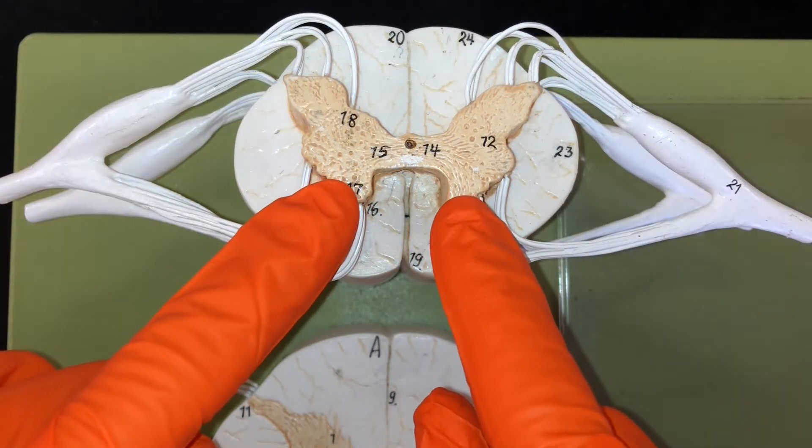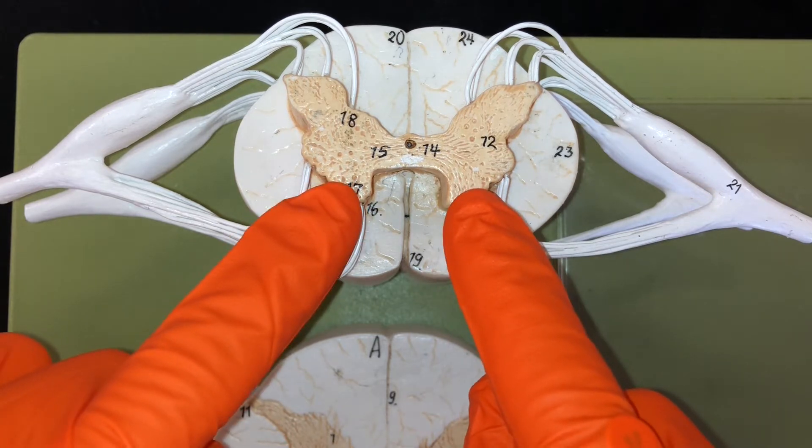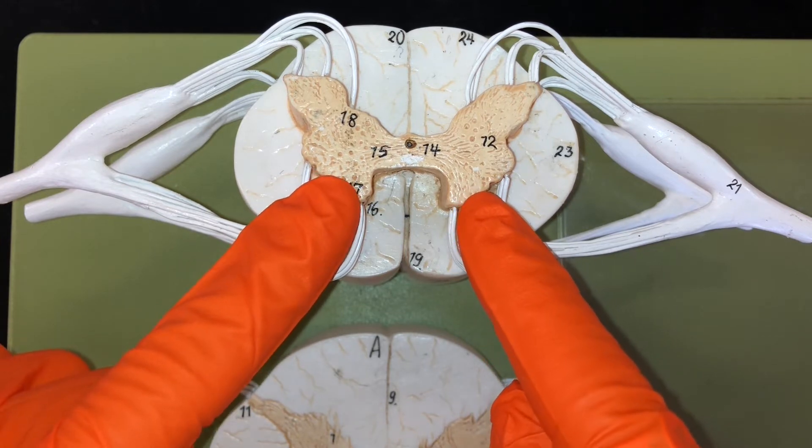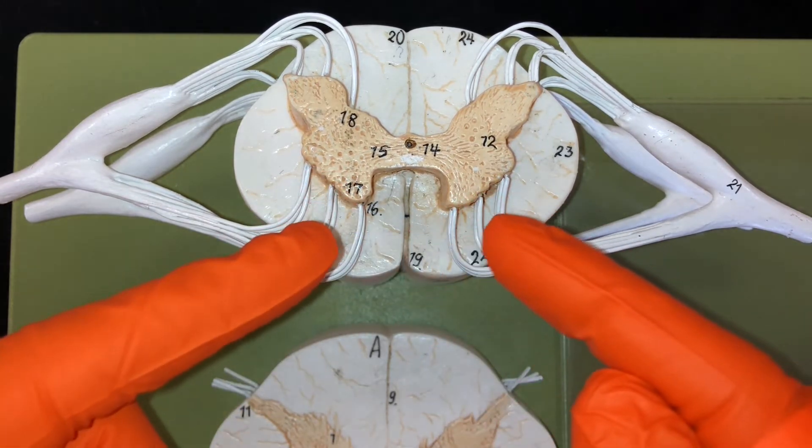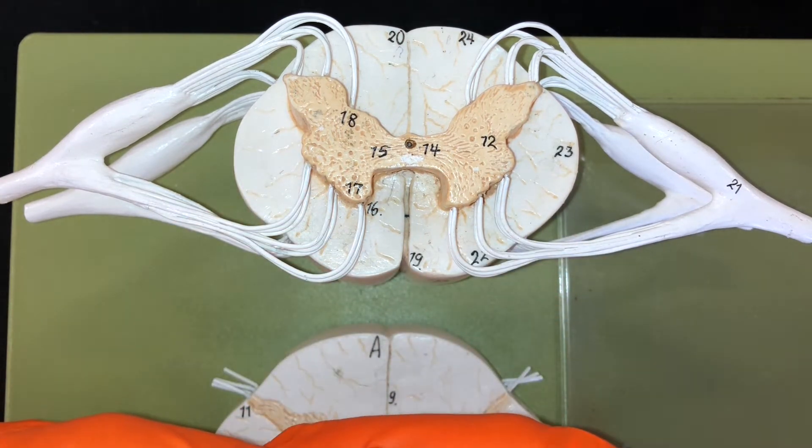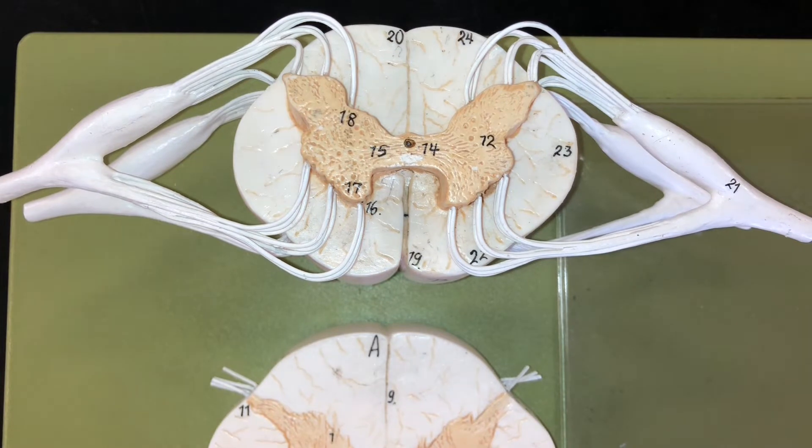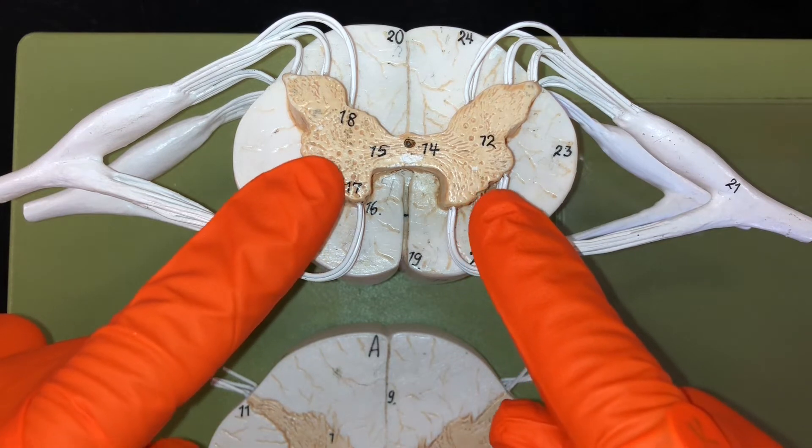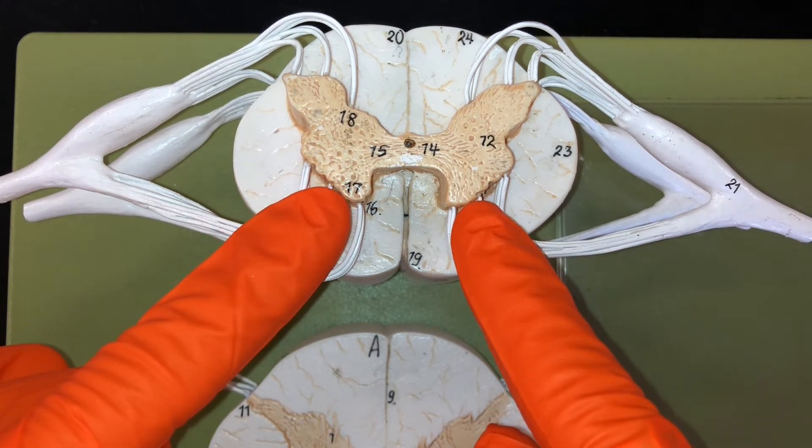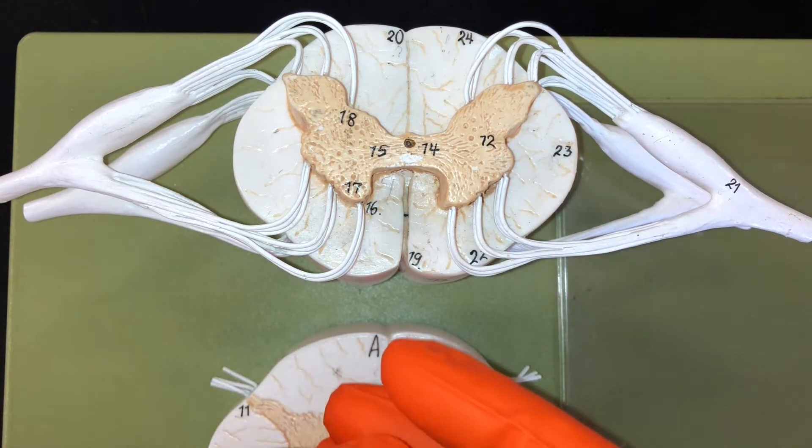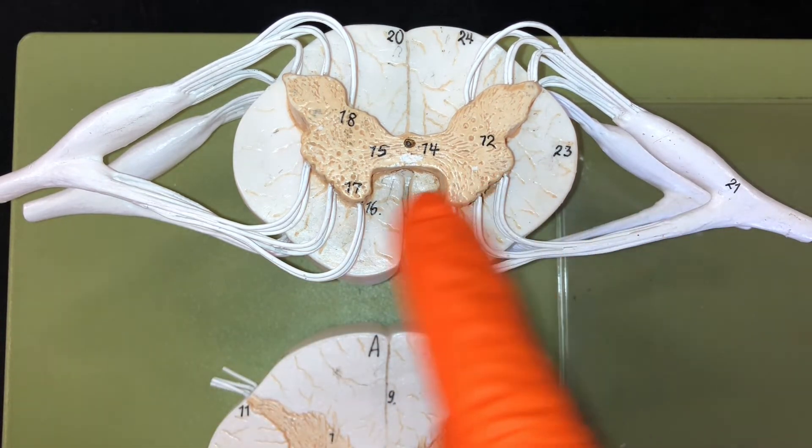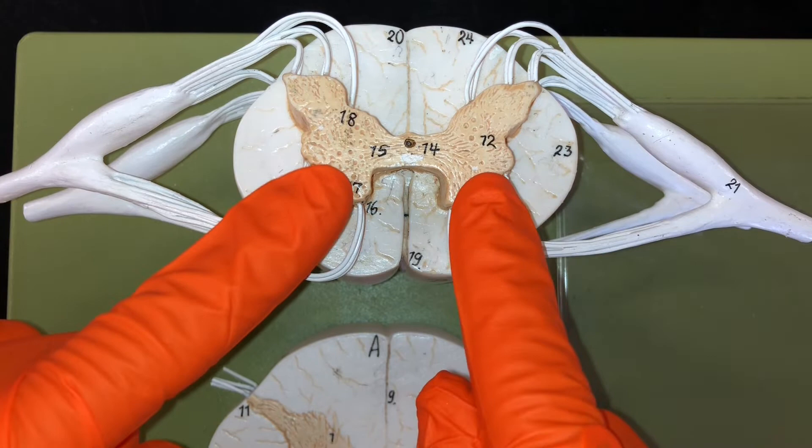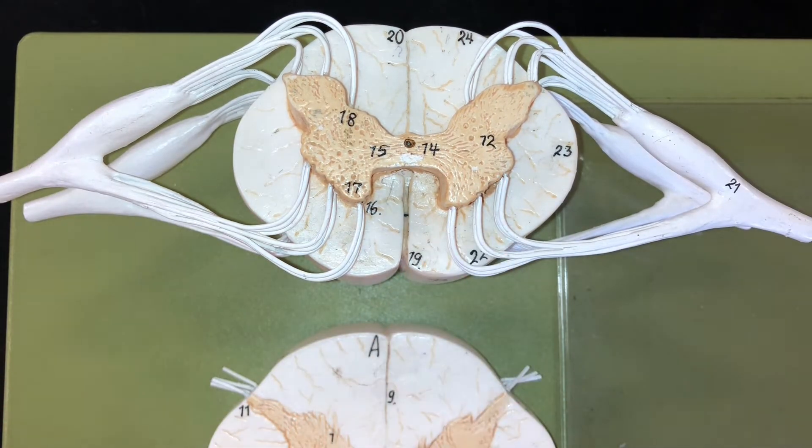And then here we have the anterior gray horns. These areas are composed of the dendrites and cell bodies of somatic motor neurons. Somatic motor neurons will end up connecting to muscles that we can control voluntarily like skeletal muscle. One interesting thing about the anterior gray horns is that this is the area where the polio virus attacks. It can cause paralysis and that's really determined by what segment of the spinal cord is affected and what skeletal muscles are affected by that part of the spinal cord.